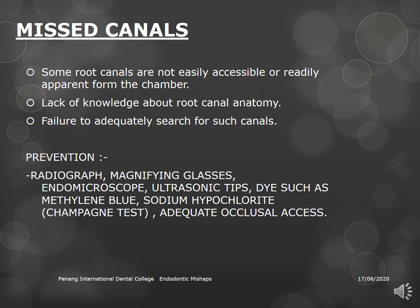Flooding the pulp chamber with sodium hypochlorite can reveal missed canals — organic tissue inside will produce small bubbles. When you see bubbles emerging, that indicates an additional canal. Most importantly, the access cavity must be adequate to expose the entire floor of the pulp chamber so no canals are missed.